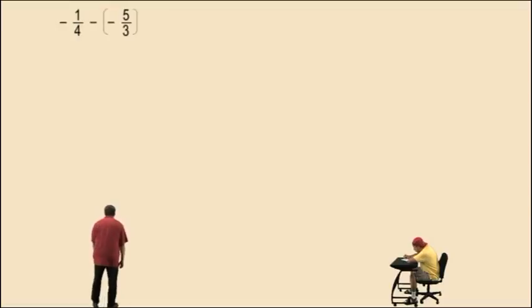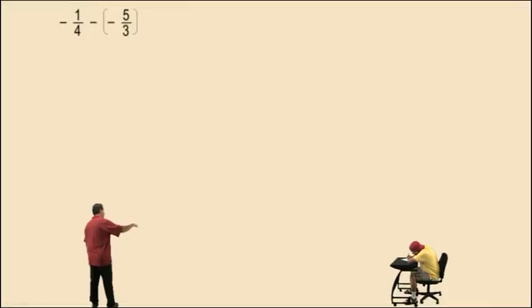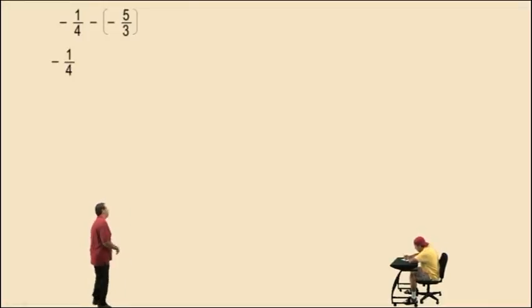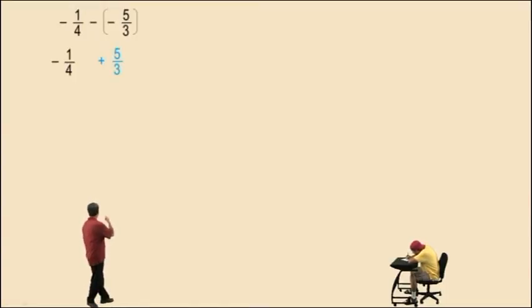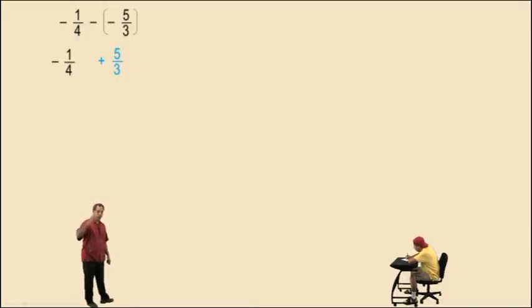Let's try this one: negative one-fourth subtract negative five-thirds. Now Charlie, what happens when you subtract a negative number? We add the opposites, right? It changes to addition. So we have negative one-fourth plus a positive five-thirds. Remember, subtracting a negative number — subtraction changes to addition and the negative five-thirds changes to its opposite, which is a positive five-thirds.